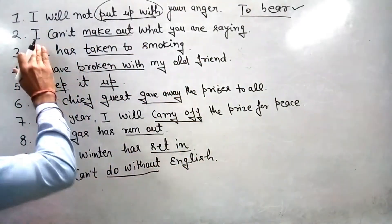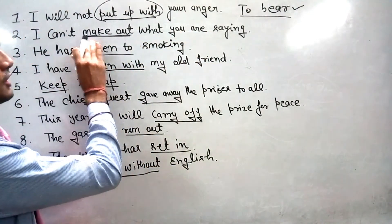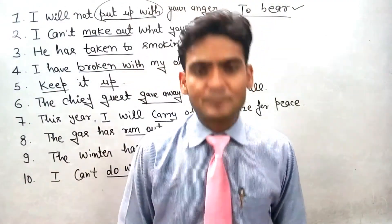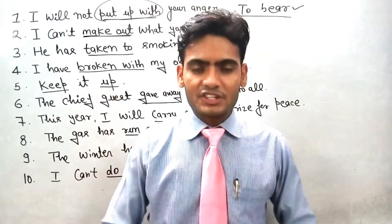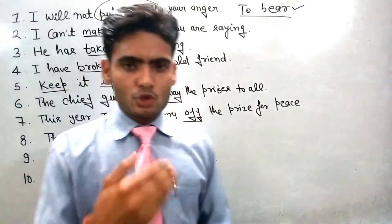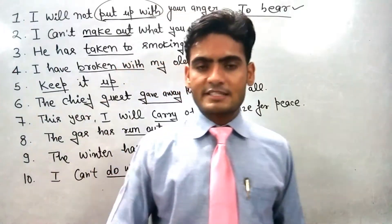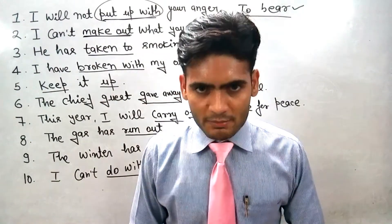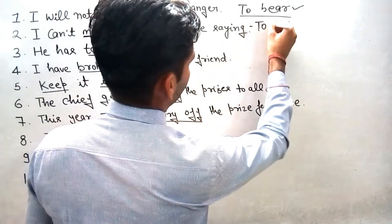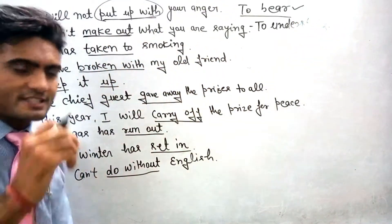अगला sentence है: 'I cannot make out what you are saying.' यहाँ phrasal verb है 'make out'. Make out का मतलब होता है किसी चीज को understand करना, यानि समझना। तो इस sentence का मतलब है: जो तुम कह रहे हो मैं उसे नहीं समझ पा रहा हूँ। So make out means: to understand.